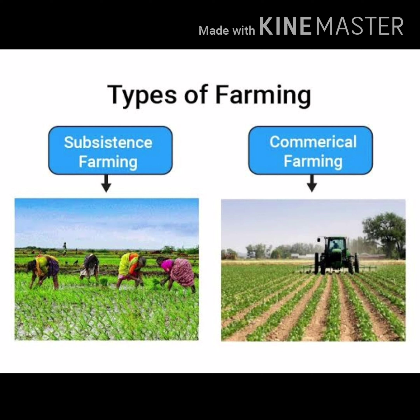Sericulture is mostly used for the commercial rearing of silkworms and may supplement the income of farmers. Pisciculture is the breeding of fish in specially constructed tanks and ponds. Viticulture is the cultivation of grapes, and horticulture is for growing vegetables, flowers and fruits for commercial use.